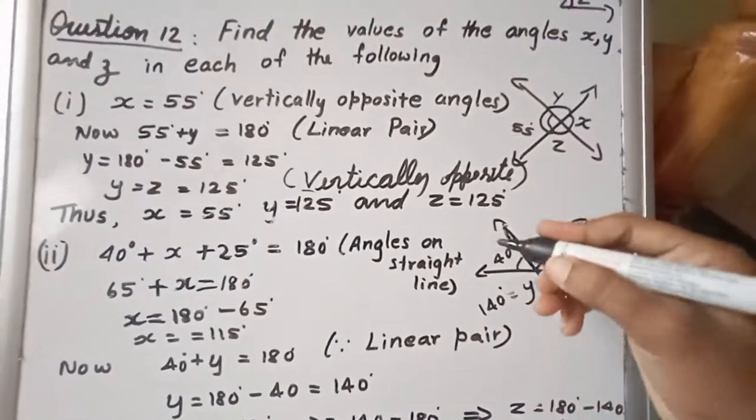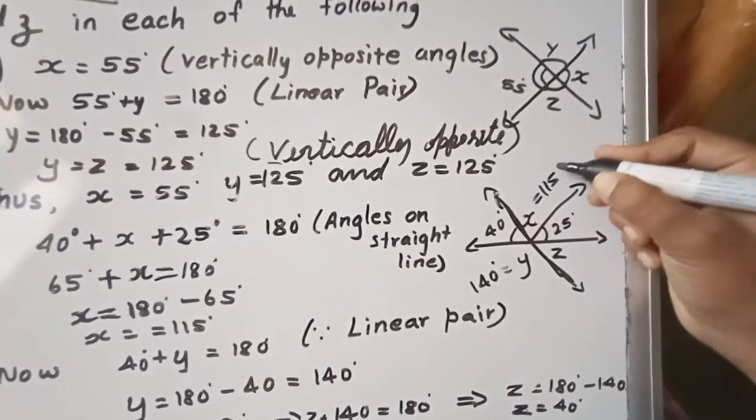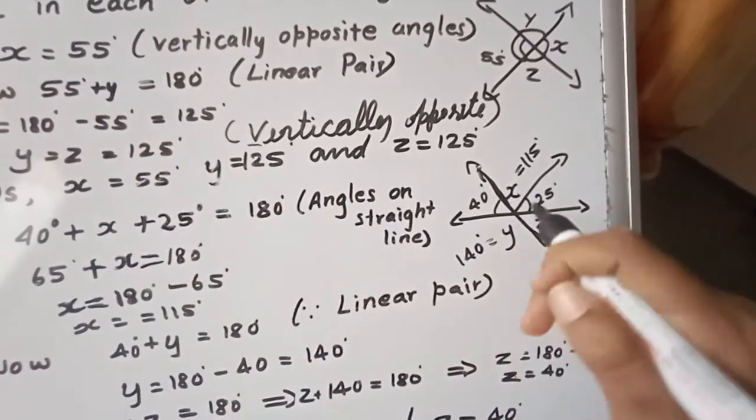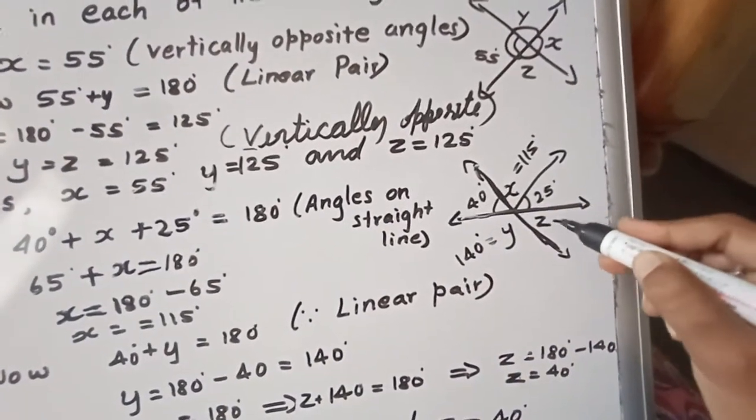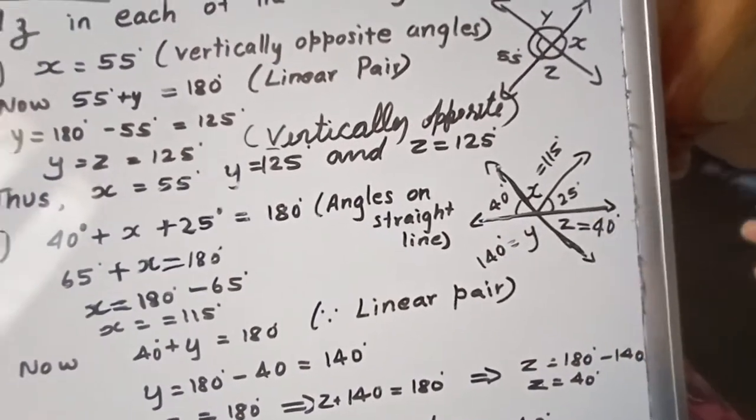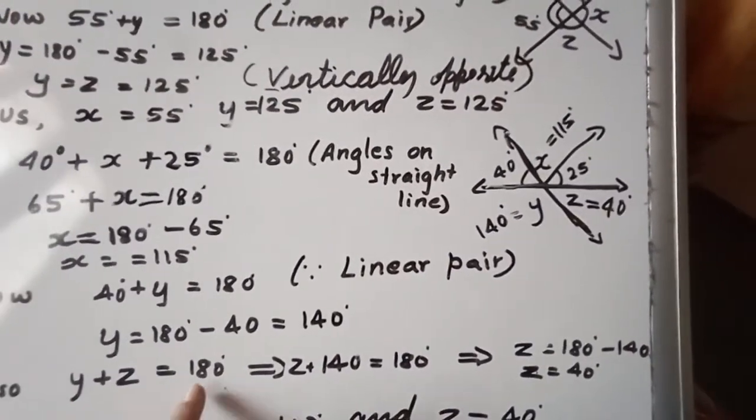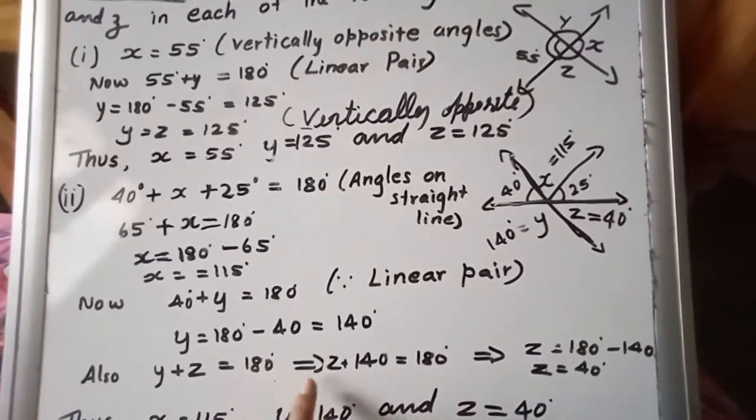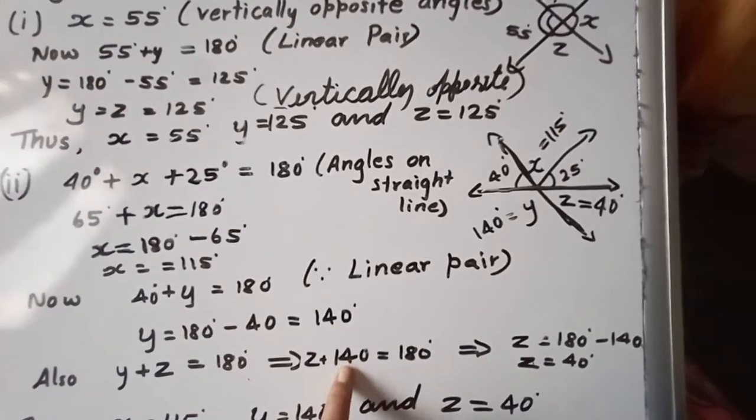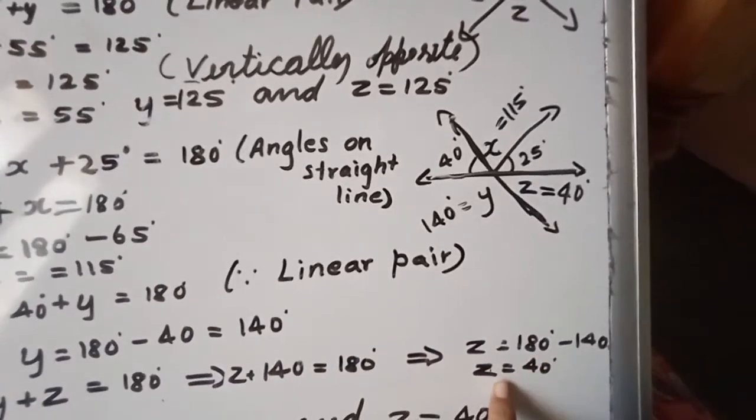So 140 plus 40 is 180. X is equal to you have got 115. Now easily we can calculate the Z. If it is 140, it is one of the straight line. You can by seeing the picture itself you will come to know it is 40. 140 plus 40 it becomes 180. Also Y plus Z is equal to 180 degree. Z is equal to, the Y value is 140 we have got. So 180, Z is equal to 180 minus 140, Z is equal to 40.